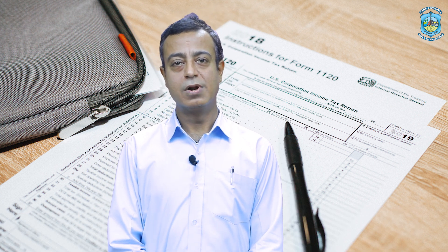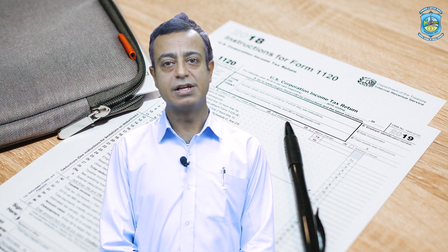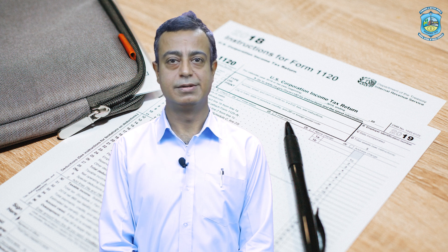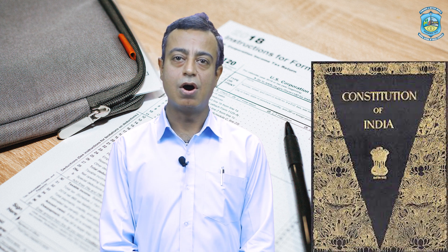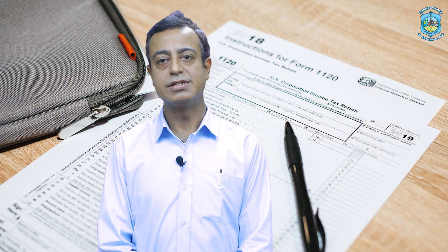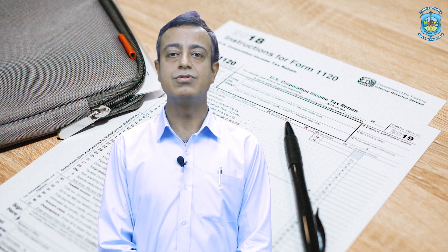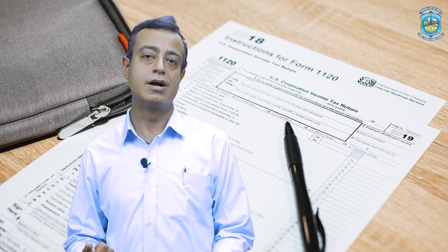This is also a very popular tax, as it is imposed in most of the developing and developed countries of the world. As per the Constitution of India, the authority of imposition of this tax lies with the central government of India only. State governments are not entitled to charge this tax; they are only entitled to charge tax on agriculture income.